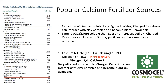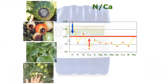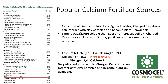Calcium nitrate is the most popular fertilizer choice for farmers seeking calcium, but if you have a nitrogen-to-calcium imbalance, using calcium nitrate doesn't justify addressing calcium deficiency — you're not fixing your problem, you're adding to it, because it provides even more nitrogen.